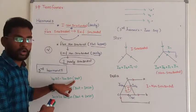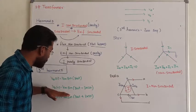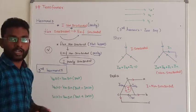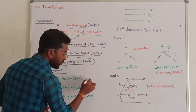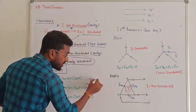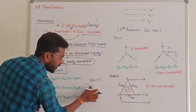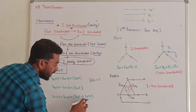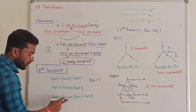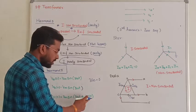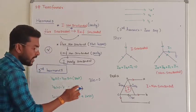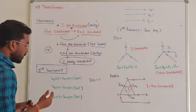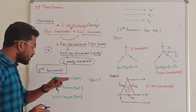At the third harmonic, the frequency becomes 3ω. For Phase B: Vm sin(3ωt − 3×120°) = Vm sin(3ωt − 360°). Since 360° equals 0°, Phase B third harmonic = Vm sin(3ωt). Similarly for Phase C: Vm sin(3ωt + 3×120°) = Vm sin(3ωt + 360°) = Vm sin(3ωt). So the conclusion is: all three phases have the same third harmonic equation — they are in-phase.